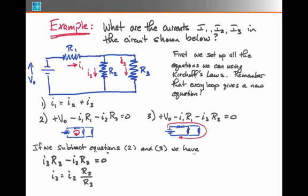This can be simplified by moving I2 R2 over to the right-hand side and dividing both sides of the equation by R3, in which case we have I3 is equal to I2 R2 over R3.